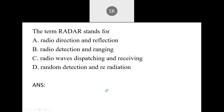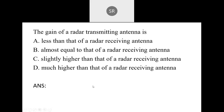Next: RADAR stands for: A — radio detection, direction and reflection; B — radio detection and ranging; C — radio waves and dispatching and receiving. People typed B, but the correct answer is B — radio detection and ranging. That is C among the options presented.